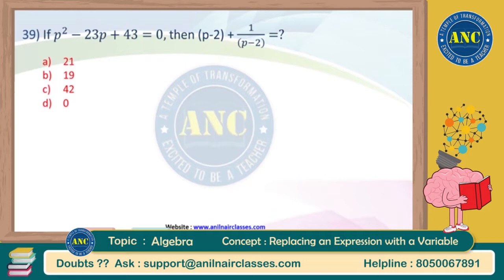I will teach you multiple methods and you can decide which method is comfortable for you. Your question is: if p² - 23p + 43 = 0, then find the value of (p - 2) + 1/(p - 2).